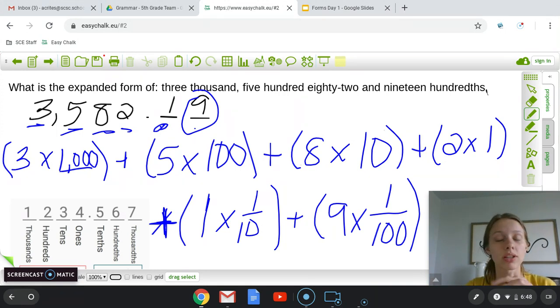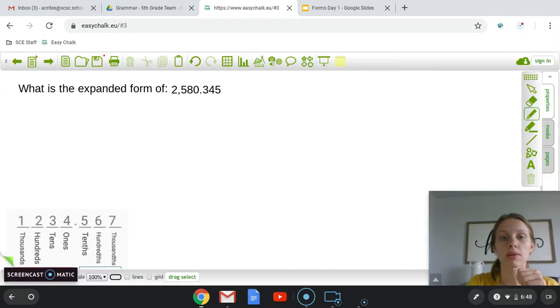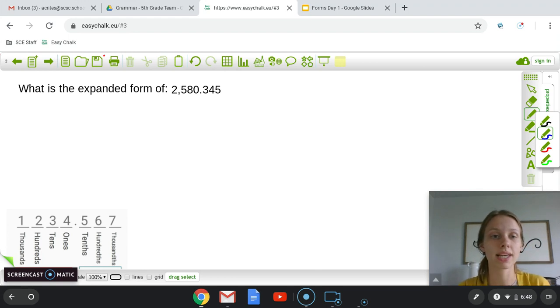Easy peasy. It looks like a lot of work, but it's a lot easier the more you do it. All right. Let's do this one. So I see, what is the expanded form of 2,580 and 345 thousandths? Big number. But that's okay. We've got this. This is easy.